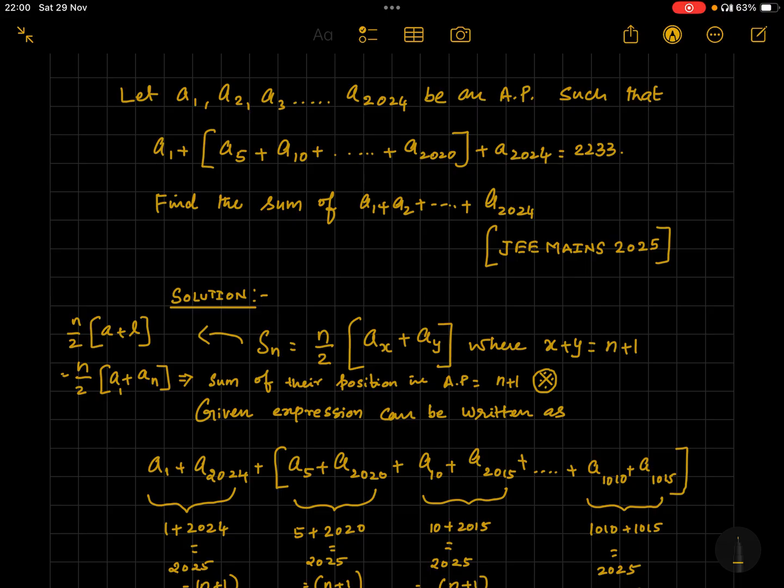Where ax and ay are two terms of AP which are equidistant from the respective ends of the AP, and where x is the position of term ax and y is the position of term ay. And if you add x plus y, that should be equal to n plus 1. If this condition is met, then you can very well use the formula Sn equals n by 2 into ax plus ay.